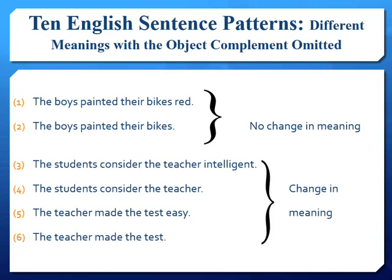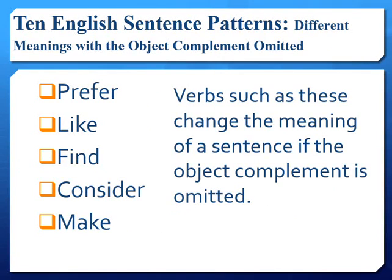Pertaining to sentences one and two, the meaning does not change when the object complement is omitted. However, pertaining to sentences three through six, the meaning changes because of the context. For example, sentence five conveys that the teacher merely modified the test to be easy for students, in contrast to sentence six where the teacher completely created the test. A change in meaning between sentences three and four occurs too — in sentence three, students assert an opinion about their teacher, but in sentence four, the students choose the teacher. Watch for sentences with these verbs because the meaning may change depending on whether there is an object complement.